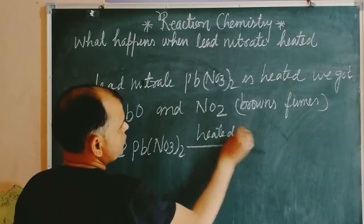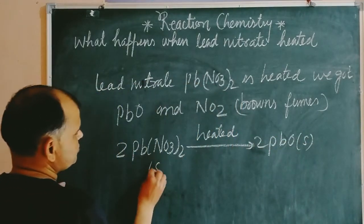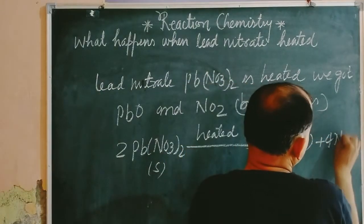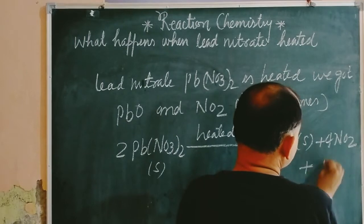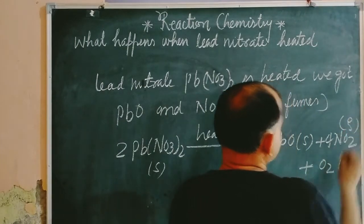we get 2PbO, which is solid state. This is also solid, and 4NO2—this is nitrogen dioxide—and O2. This is gaseous state, this is also gaseous state.